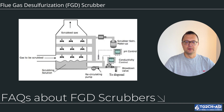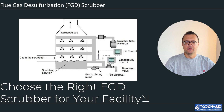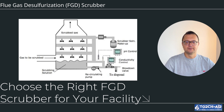How often do FGD scrubbers require maintenance? Routine maintenance includes cleaning spray nozzles, replacing worn parts like fans and valves, and managing by-product disposal. It's recommended to perform checks every three to six months depending on the system's workload. Whether you're in power generation, chemical processing, or manufacturing, flue gas desulfurization scrubbers are essential for controlling SO2 emissions and ensuring regulatory compliance. By understanding the design, technology, and available models, you can make an informed choice that suits your facility's needs. At Torch Air, we offer a range of customized FGD scrubber systems that are both efficient and environmentally friendly.